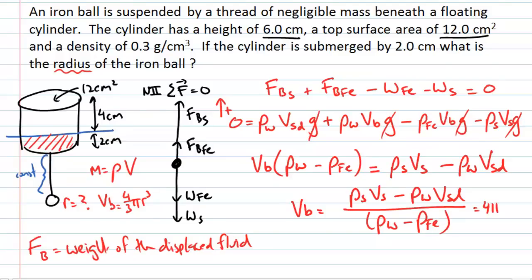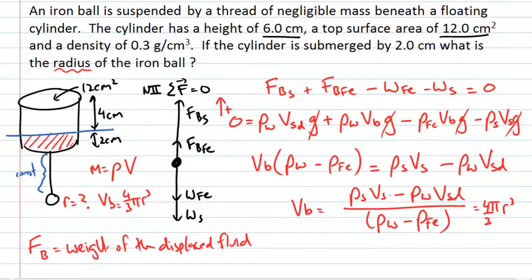This expression equals 4/3 π r³, so let's evaluate it numerically. The density of styrofoam is 0.3 g/cm³. The total volume of the styrofoam is area times height = 12 × 6 = 72 cm³. The density of water is 1 g/cm³. The displaced volume of styrofoam (the portion below water) is 2 × 12 = 24 cm³. On the denominator, we have 1 minus the density of iron, which we look up as 7.9 g/cm³.